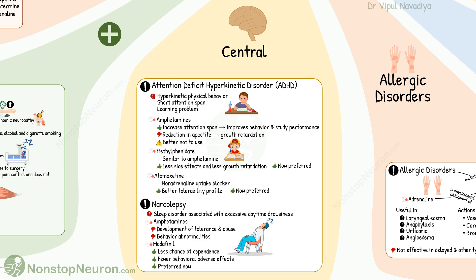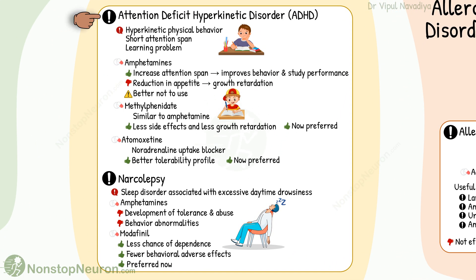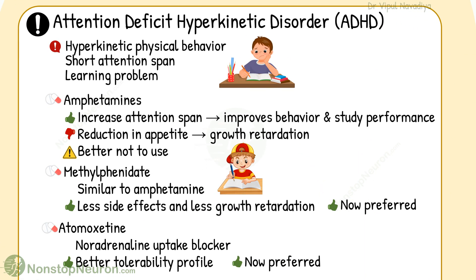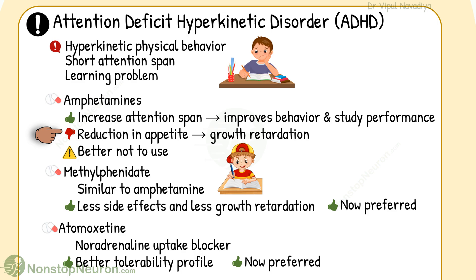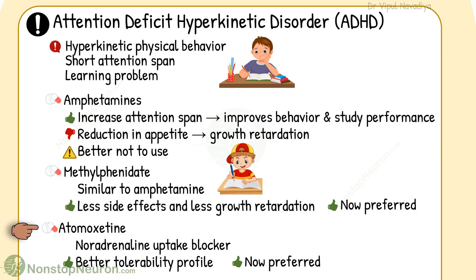Now let's move to the central nervous system. Central uses include attention deficit hyperkinetic disorder, or ADHD, and narcolepsy. ADHD is common in children and is associated with hyperkinetic physical behavior, short attention span, and learning problems. Amphetamines increase attention span, improving behavior and study performance, but reduction in appetite may lead to growth retardation. It is generally better not to use amphetamine. Methylphenidate is similar to amphetamine but produces fewer side effects and less growth retardation, so it is now preferred. Atomoxetine is a noradrenaline uptake blocker with a better tolerability profile and is also preferred.